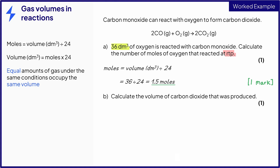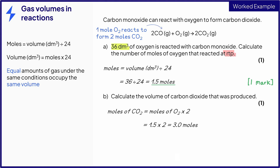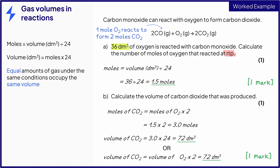Part B asks you to calculate the volume of carbon dioxide produced, and there are two ways that you can do this. The balanced symbol equation shows us that one mole of oxygen will react to form two moles of carbon dioxide. We can use the answer from Part A to calculate the number of moles of carbon dioxide, as it will be two times the number of moles of oxygen, then multiply the moles by 24 to get the volume. Alternatively, you can use the idea that equal amounts of gas will occupy the same volume — since carbon dioxide produced is twice the amount of oxygen reacted, the volume of carbon dioxide will be twice the volume of oxygen, so we can simply multiply 36 by 2. This is a more direct way to find the final answer.